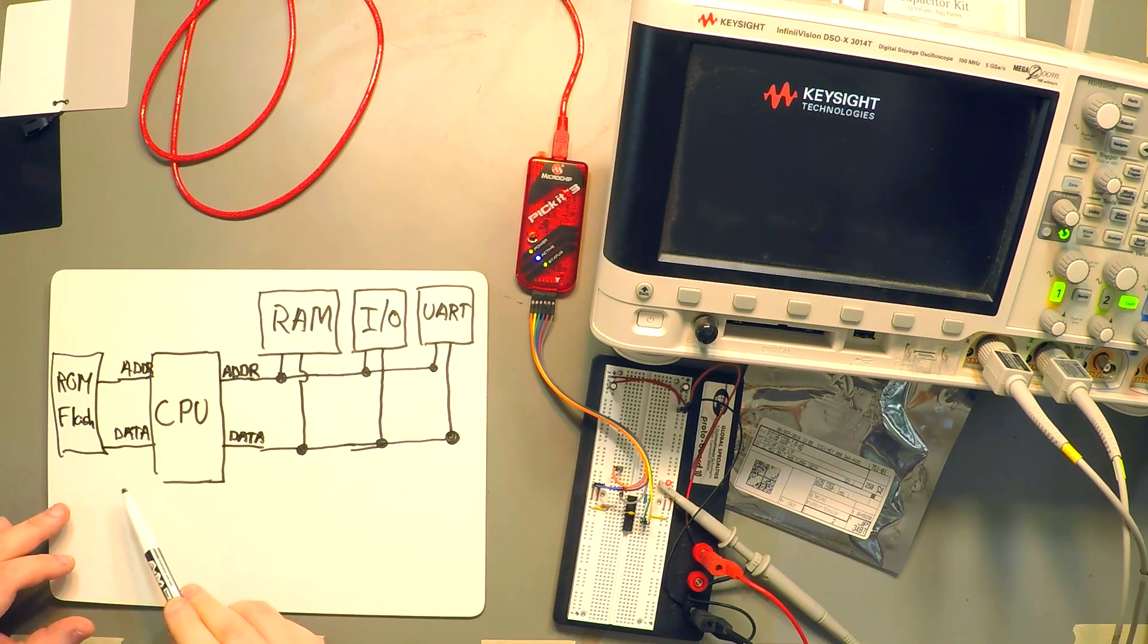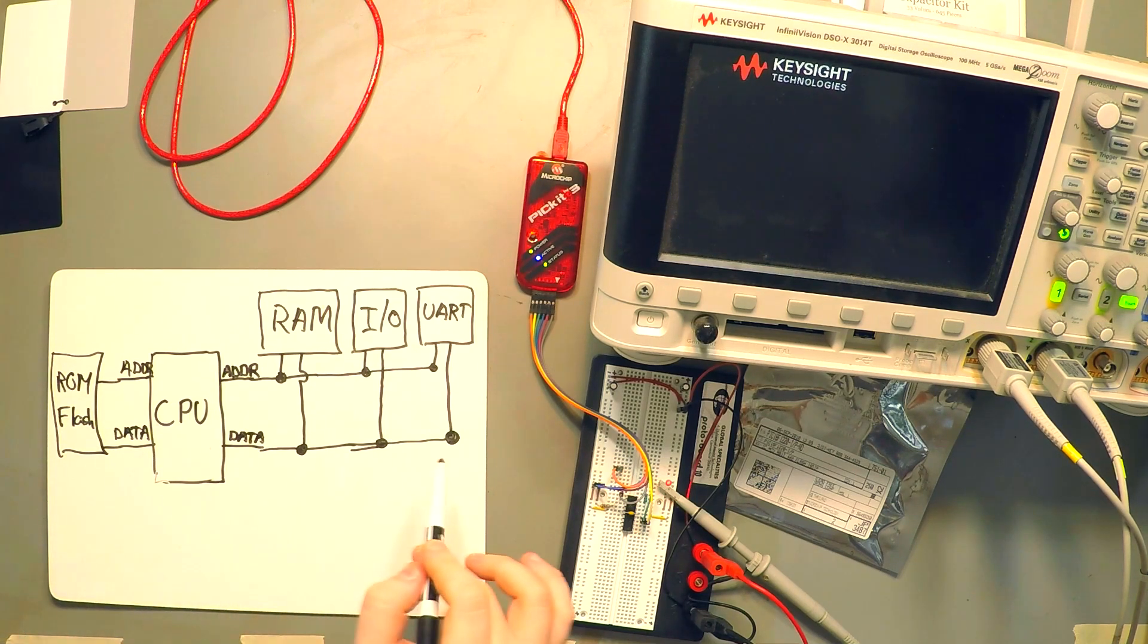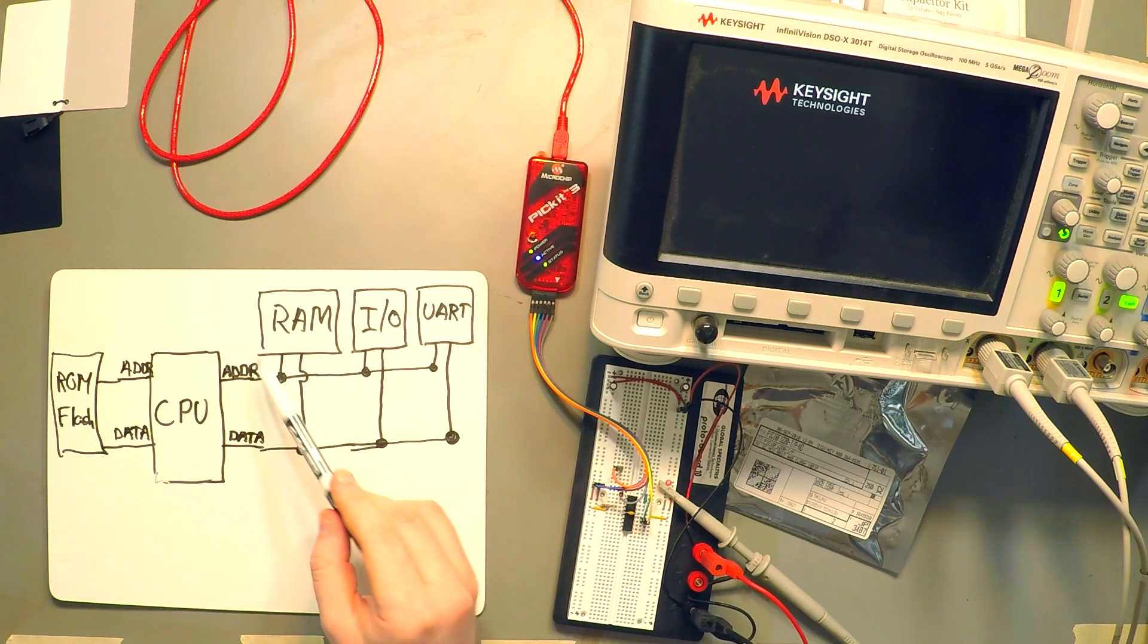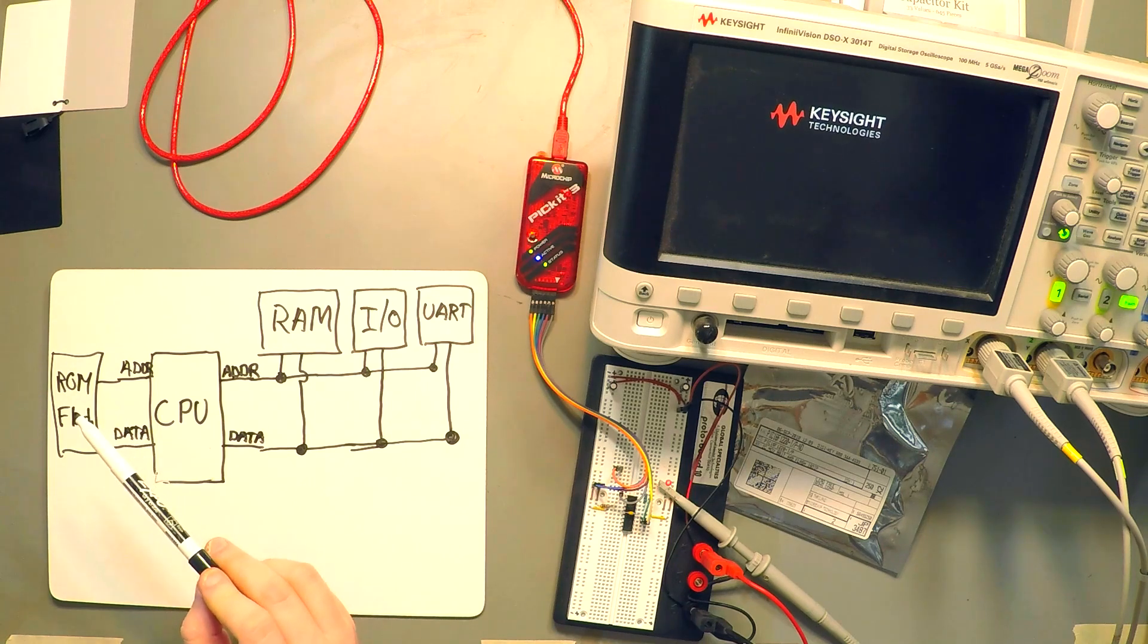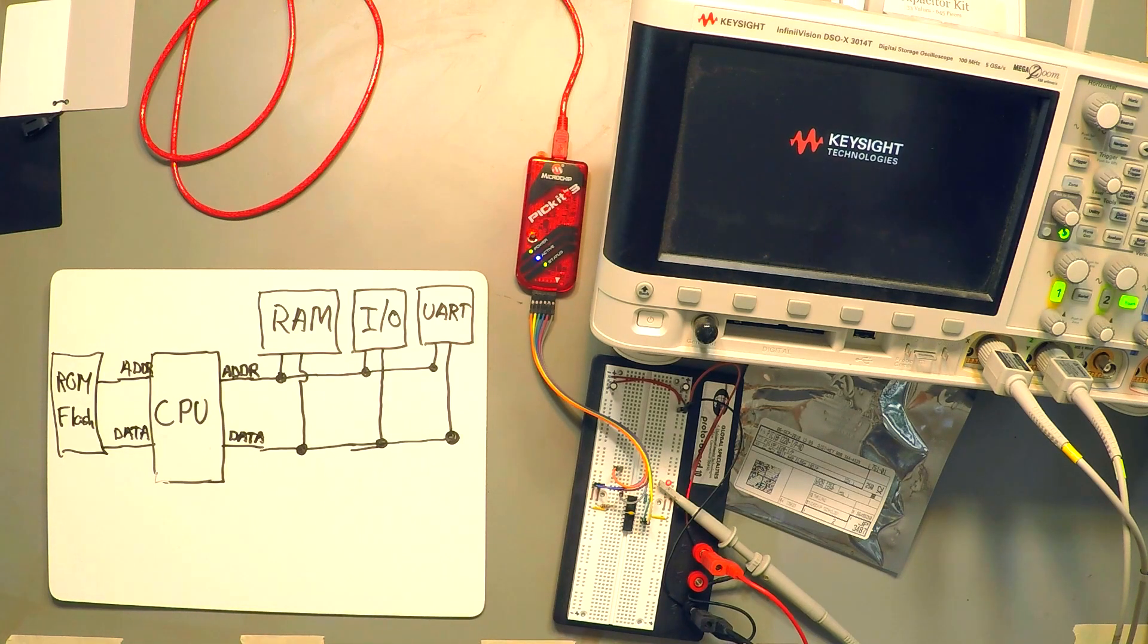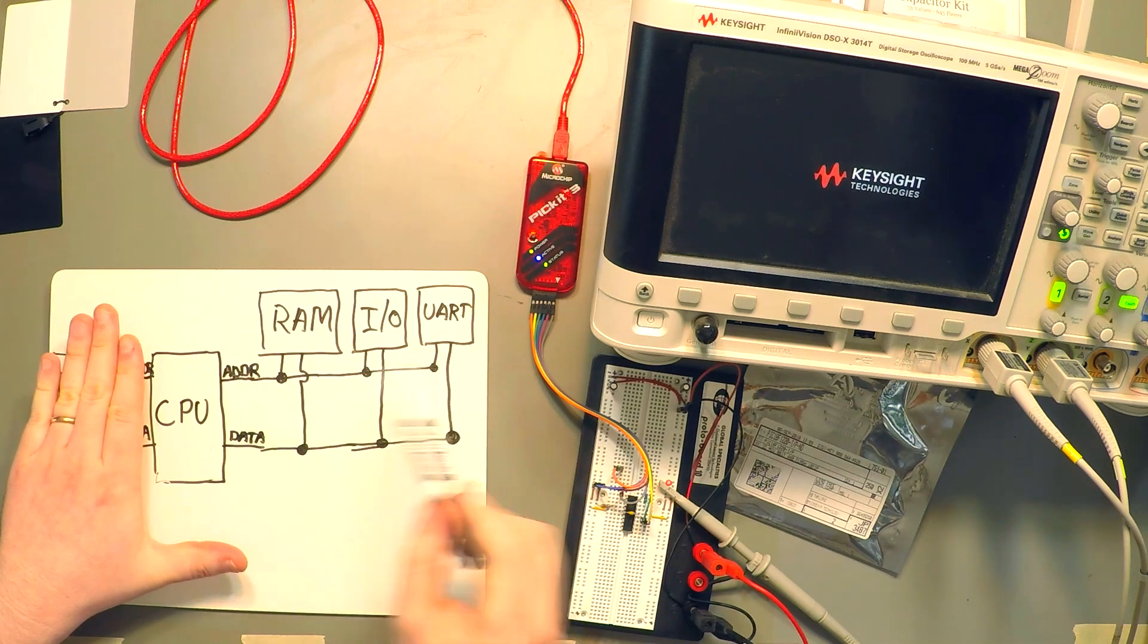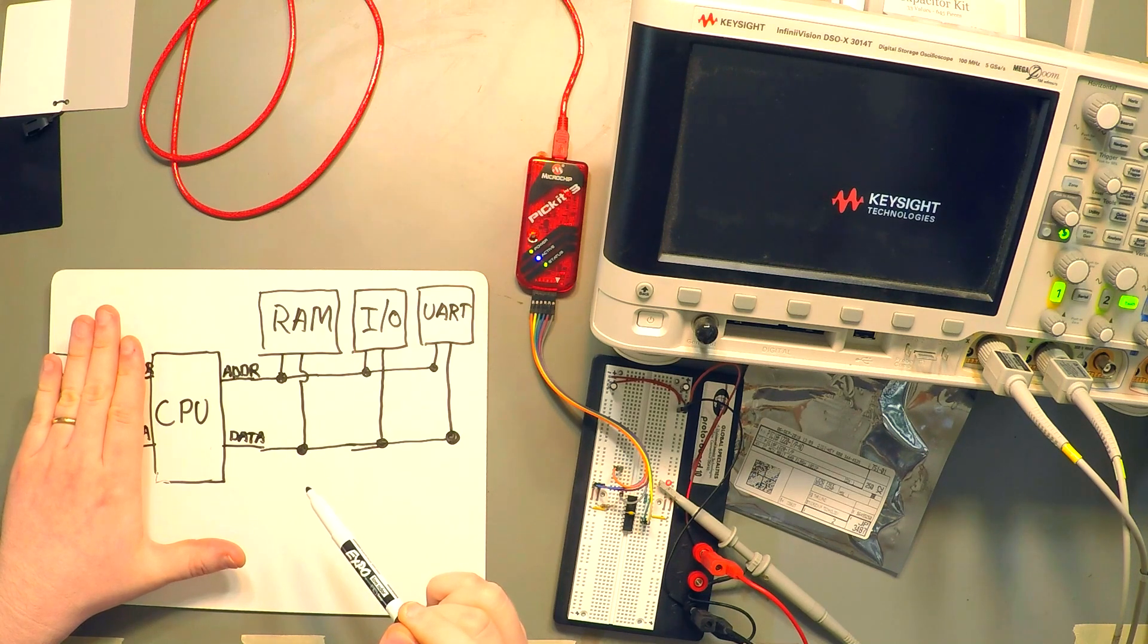And this ROM or flash memory will actually hold the instructions that the CPU will execute. This architecture right here that has two sets of address and data buses with one set going to different kinds of peripherals and the other set of buses going to the memory holding the instructions is called Harvard architecture because it was invented at Harvard. And just as a random bit of information,